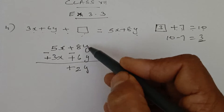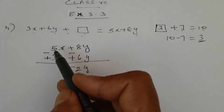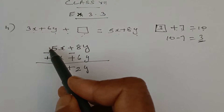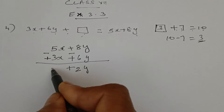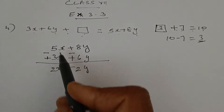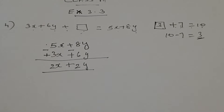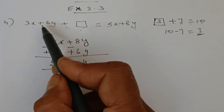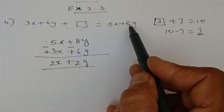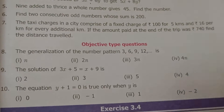Both y terms and both x terms are like terms, so we can add or subtract them. For the x terms: 5 is positive and 3 is negative — different signs, subtract: 5 minus 3 is 2, sign of the greater number is plus, giving 2x. So the answer is 2x + 2y. Therefore, 2x + 2y has to be added to 3x + 6y to get 5x + 8y.